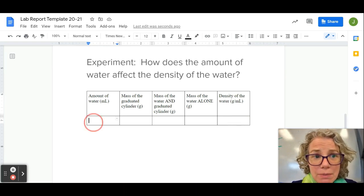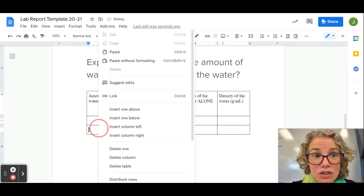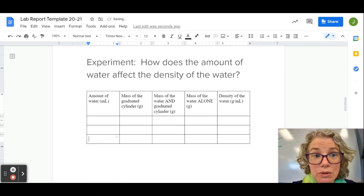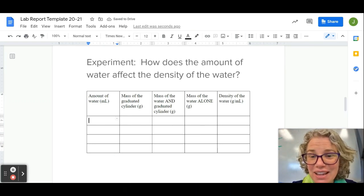Now of course I'm going to do more than one trial, so I need to right click and insert some additional rows below. Now I can hopefully my data will back up that the density of the water doesn't change. Doesn't matter how much water I have, the density should stay the same.